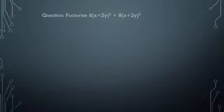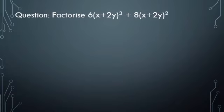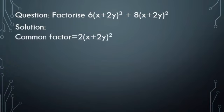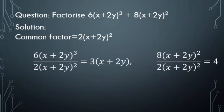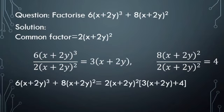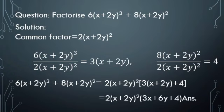Now let us solve some questions based on this method. First: factorize 6(x + 2y)³ + 8(x + 2y)². Here the common factor is 2(x + 2y)². When you divide the first term by the common factor, you get 3(x + 2y), and the second term gives 4. So the factorization is 2(x + 2y)²[3(x + 2y) + 4], which simplifies to 2(x + 2y)²(3x + 6y + 4).